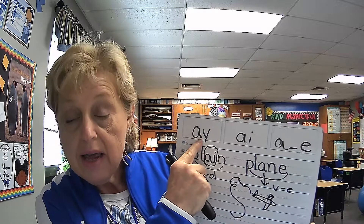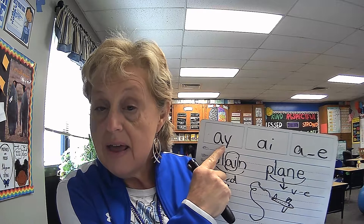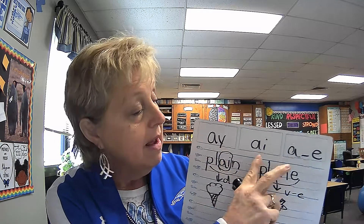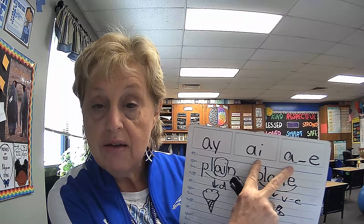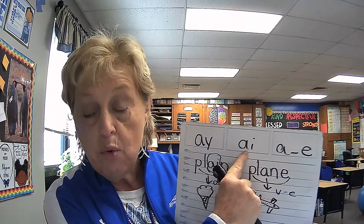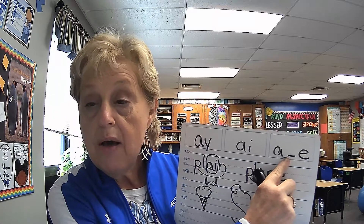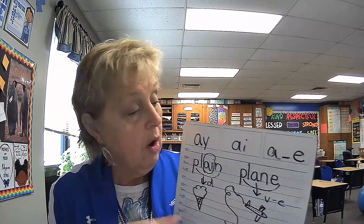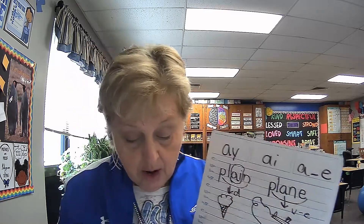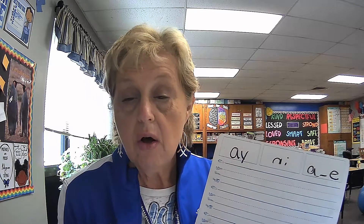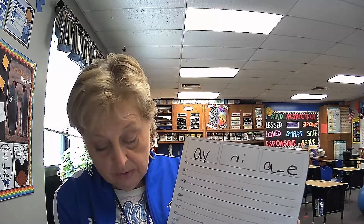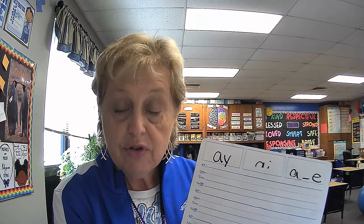We also learned that A-Y is always used at the end of a word when you don't have another consonant at the end, and that A-I and A-E are always in the middle of the word and must have at least one consonant sound at the end. The type of words we're looking at today are called homophones — words that sound alike but have different meanings.